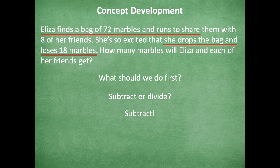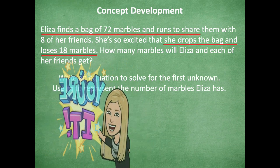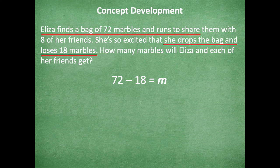We know she had 72 marbles, she drops the bag and loses 18, so we subtract to find how many she has left. Write an equation using m to represent the number of marbles Eliza has after losing some. She starts with 72, loses 18 — go ahead and pause, write the equation using m, and solve for m, then click play when ready. Here's what I came up with: 72 minus 18 equals m, and m equals 54. So now she has 54 marbles.